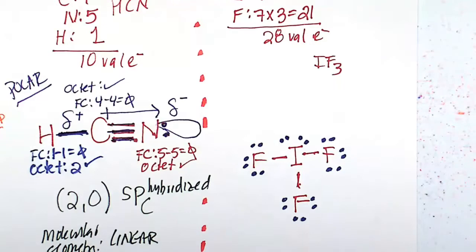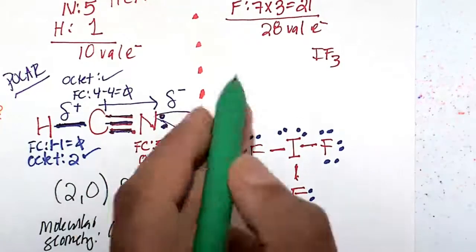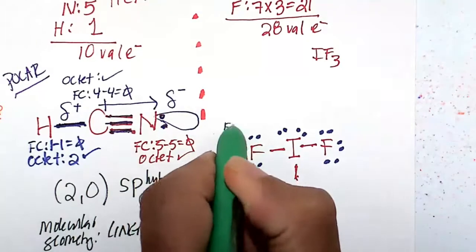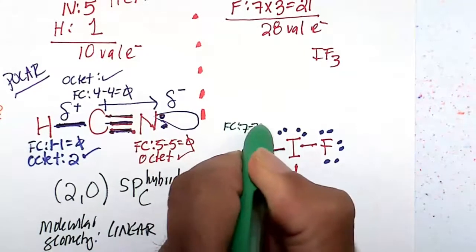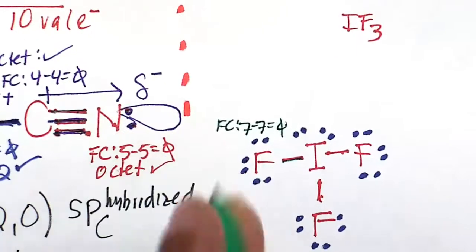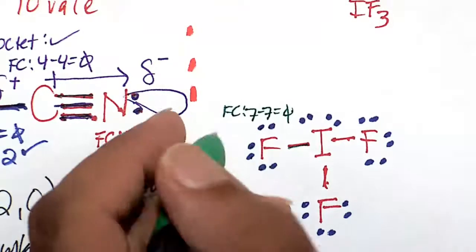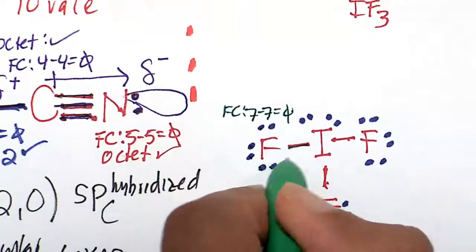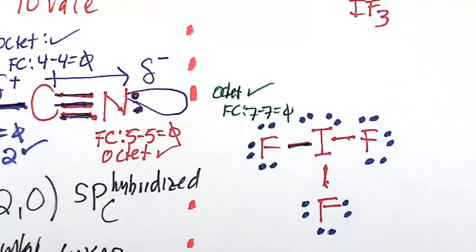Let's do our formal charge and octet rule considerations to make sure this is the best representation of the structure. For the fluorines, which are all equivalent, the formal charge is 7 minus 7 equals 0. The octet rule for this fluorine, realizing all three are the same, shows 8 electrons around each. This satisfies the octet rule just fine.